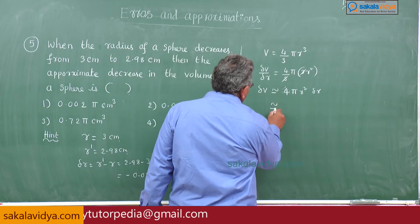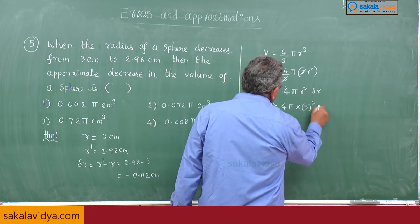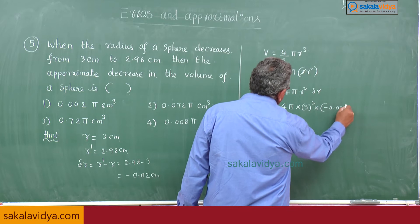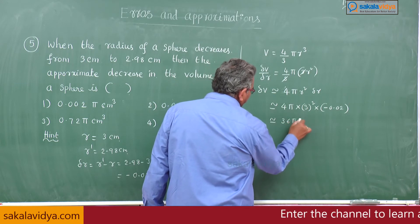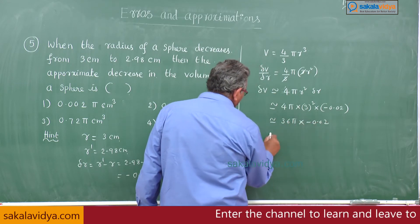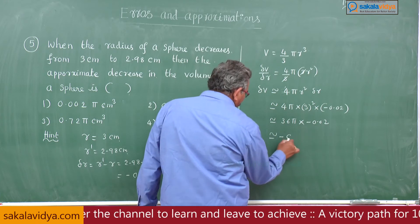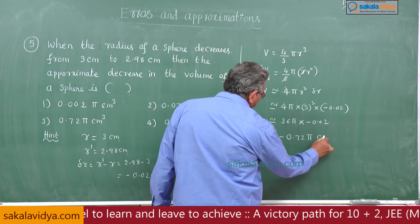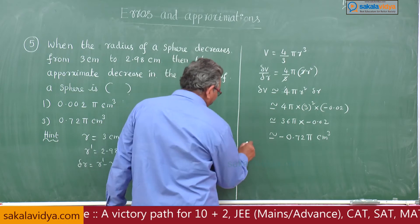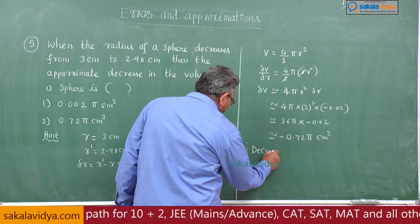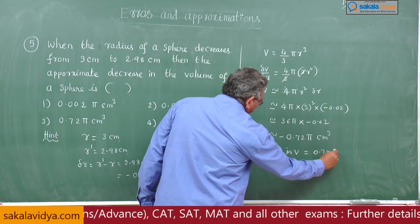Substituting: 4 pi multiplied by r squared — that is 3 squared equals 9 — and delta r is minus 0.02. So we get 36 pi into minus 0.02, which gives minus 0.72 pi centimeter cube. The minus sign indicates a decrease, so decrease in v is equal to 0.72 pi centimeter cube.